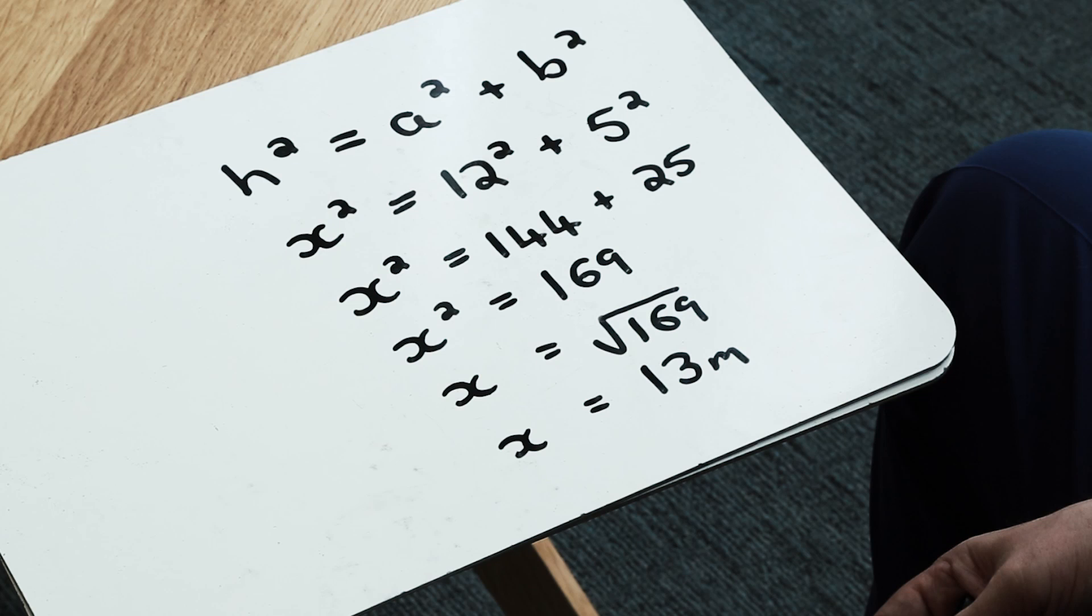So in summary, I state my formula, I substitute my values, I progress, I work at a value, I check the answer is sensible, and I can see that the longest side, this hypotenuse value, is considered to be 13 metres.